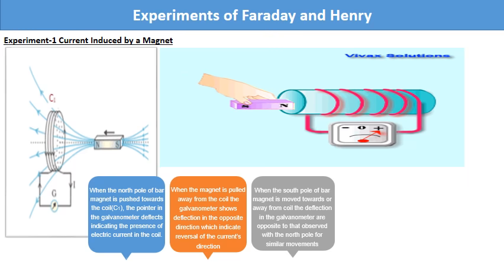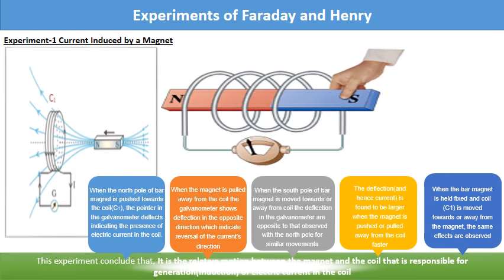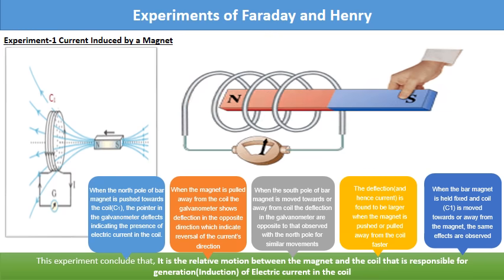Moreover, when the south pole of bar magnet is moved towards or away from coil, the deflection in the galvanometer are opposite to that observed with the north pole, for similar movements. Further, the deflection and hence current is found to be larger when the magnet is pushed or pulled away from the coil faster.